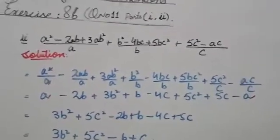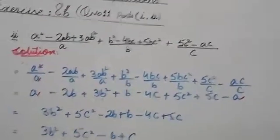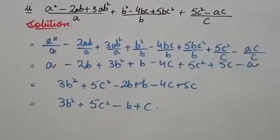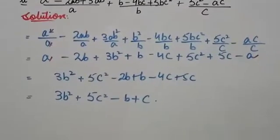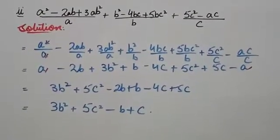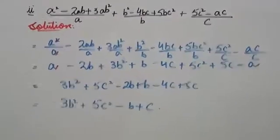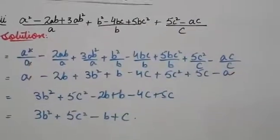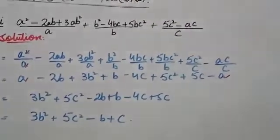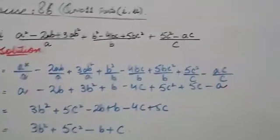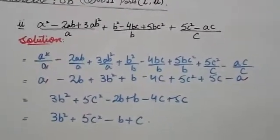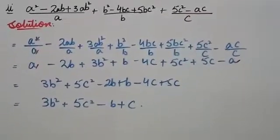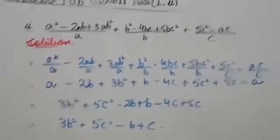For b² minus 4bc plus 5bc² by b: b² by b — b is present two times in numerator and one time in denominator, so b cancels leaving plus b. Then bc by b: b cancels leaving minus 4c. Then 5bc² by b: b cancels leaving plus 5c². For 5c² minus ac by c: 5c² by c gives 5c, and ac by c gives minus a.